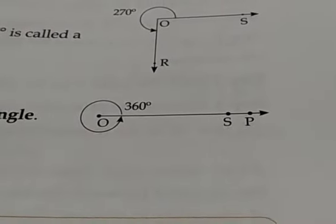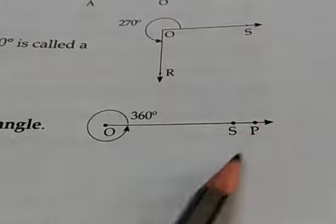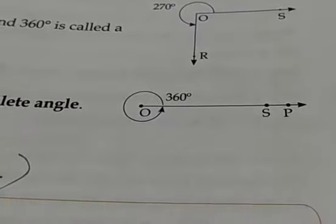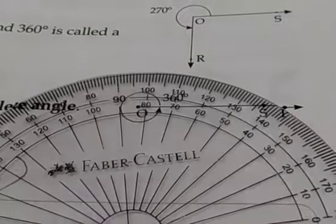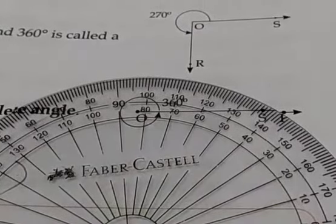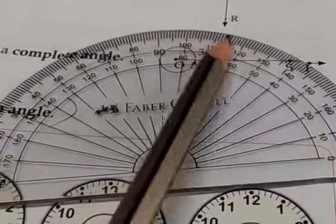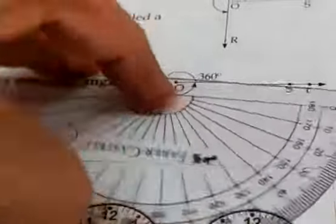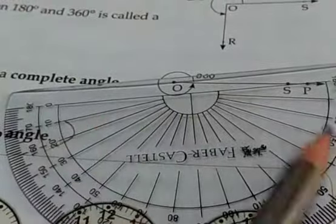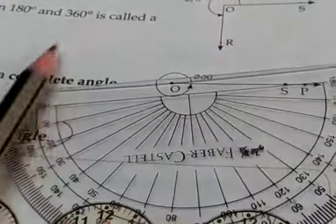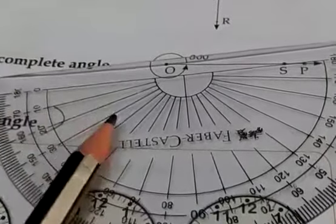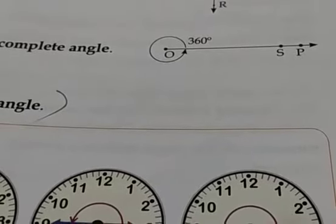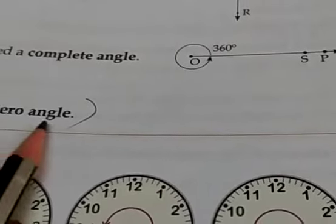Next, we have complete angle. The complete set of the protractor — an angle whose measure is 360 degrees. If you see the protractor, you have 180 here, and again we start from 0, we have 180 here. If we reverse like this, that is the whole circle — this is a semicircle, and the next semicircle — this is a complete angle. Next, we have zero angle. An angle whose measure is just 0 degrees is called a zero angle.